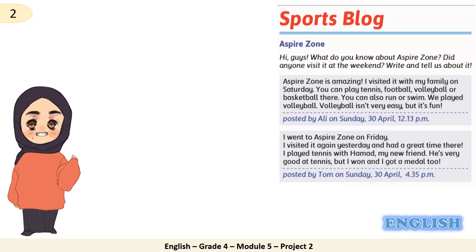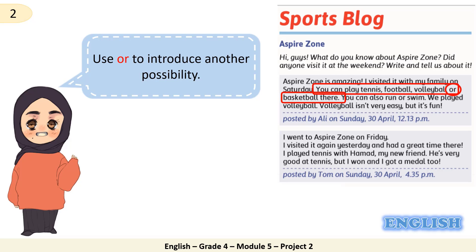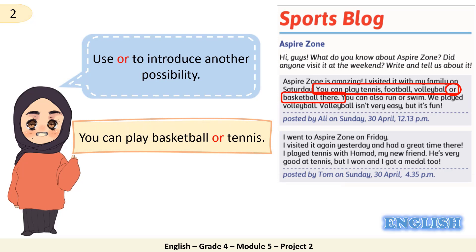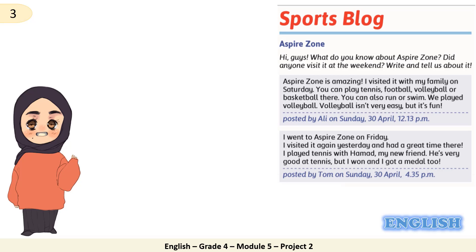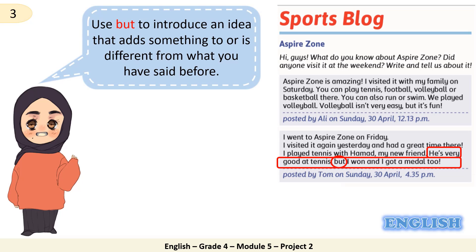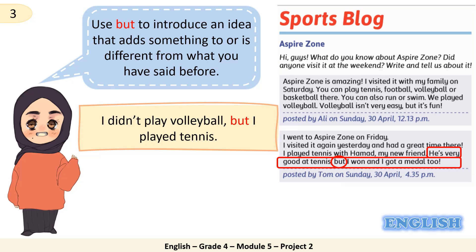Let's go back to the text again and read along: 'You can play tennis, football, volleyball, or basketball there.' Look at the word 'or'. When do we use it? Writing Tip 2: Use 'or' to introduce another possibility. Read the example with me: 'You can play basketball or tennis.' Now look at the text and read with me: 'He is very good at tennis, but I won and I got a medal too.' Look at the word 'but'. Writing Tip 3: Use 'but' to introduce an idea that adds something to or is different from what you have said before. Read the example: 'I didn't play volleyball, but I played tennis.'